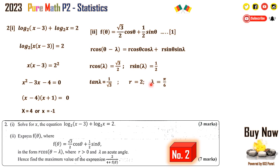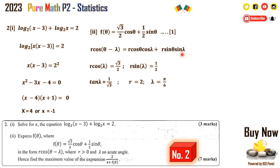The square root of (root 3 over 2) squared plus (a half) squared gives the square root of 1, so r equals 1. Then since tan lambda equals 1 over root 3, that angle must be pi over 6, because sin 30° equals a half and cos 30° equals root 3 over 2. Therefore lambda equals pi over 6, and we can rewrite f of theta as r·cos(theta − lambda) equals cos(theta − pi over 6).